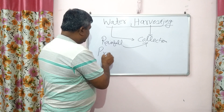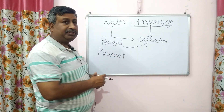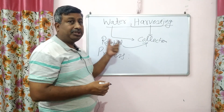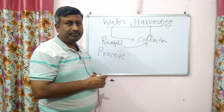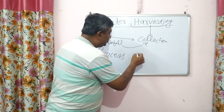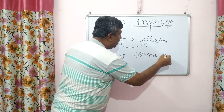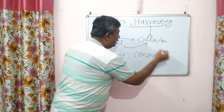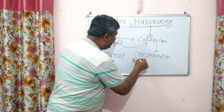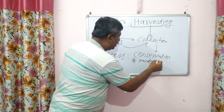So water harvesting is the process of collection of rainfall. Or we can say the further step is conservation — we are collecting it for conservation. So conservation of rainfall is water harvesting.